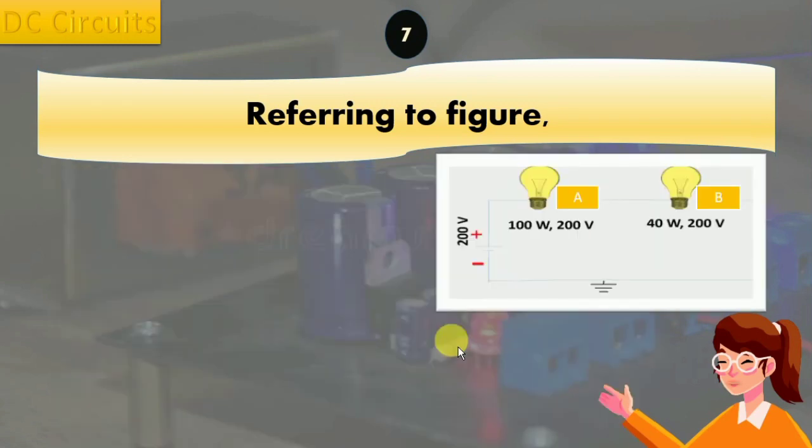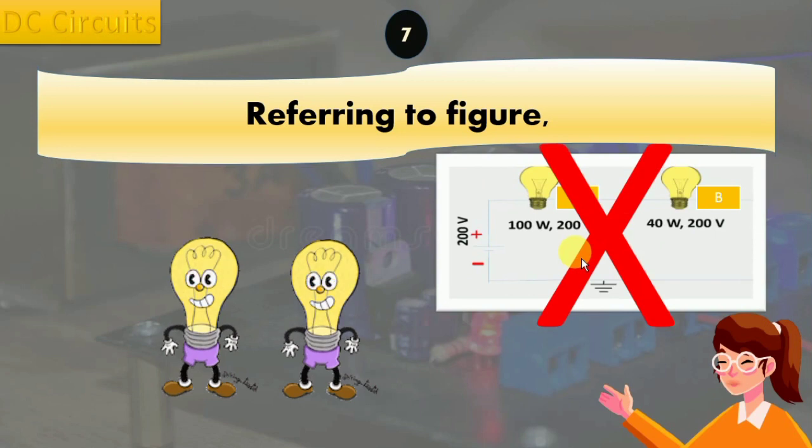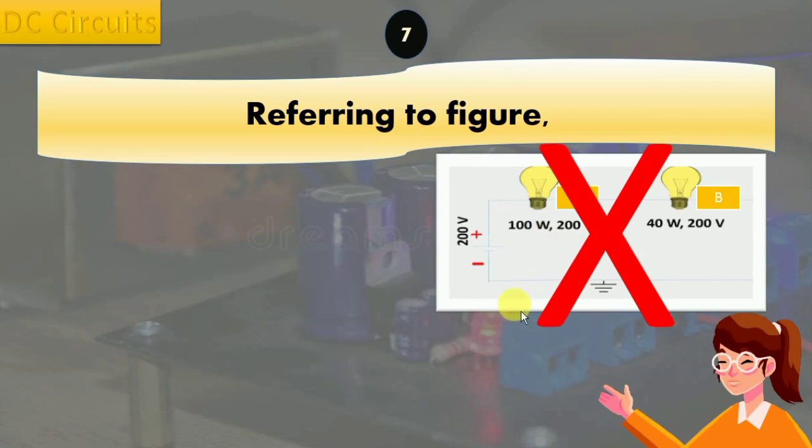However, it's worth noting that connecting bulbs with different wattage ratings in series is generally not recommended, as it can cause uneven illumination and premature failure of the bulbs. It's usually better to connect bulbs with the same wattage rating in series or to use a parallel circuit instead.